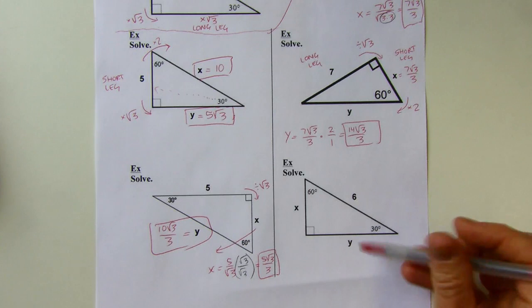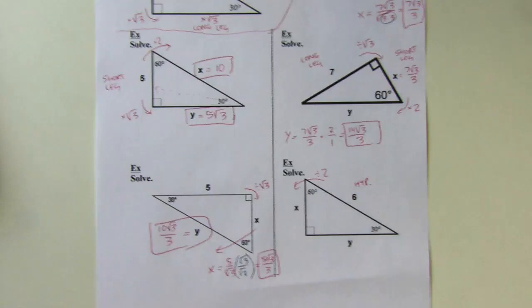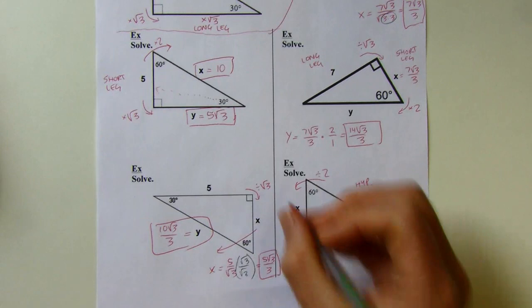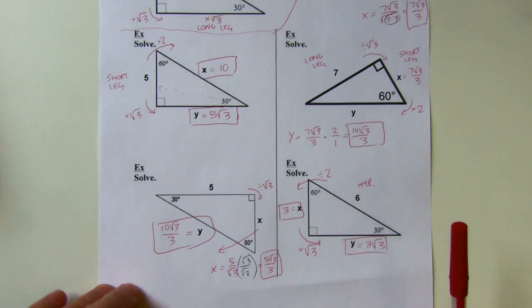This last one — this time I've got the hypotenuse. I want the short leg as quickly as possible. Since I double the short leg to get the hypotenuse, going the other direction I take half of the hypotenuse. So x equals 3. Then short leg to long leg, multiply by root 3 — so that's 3 root 3.